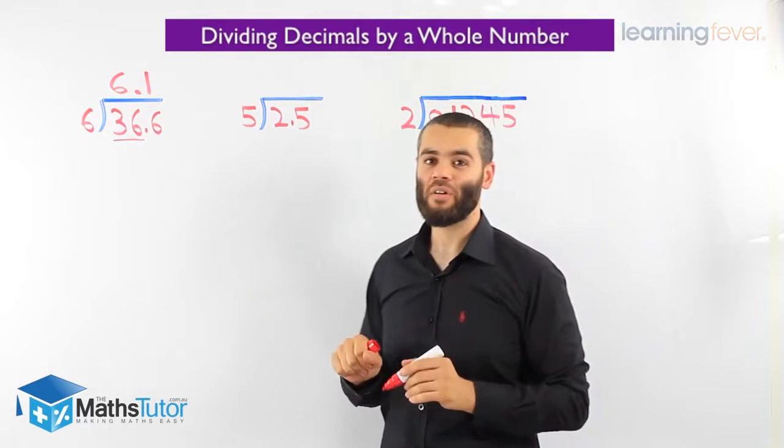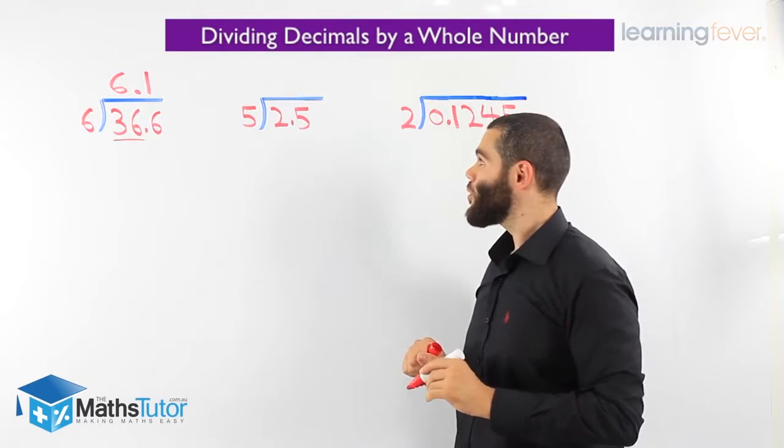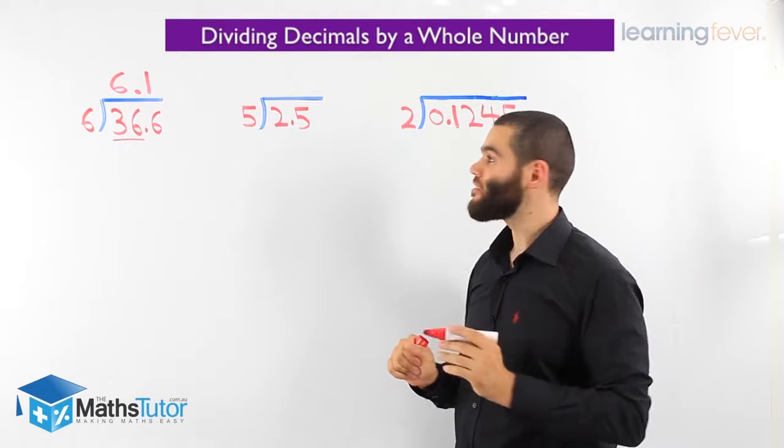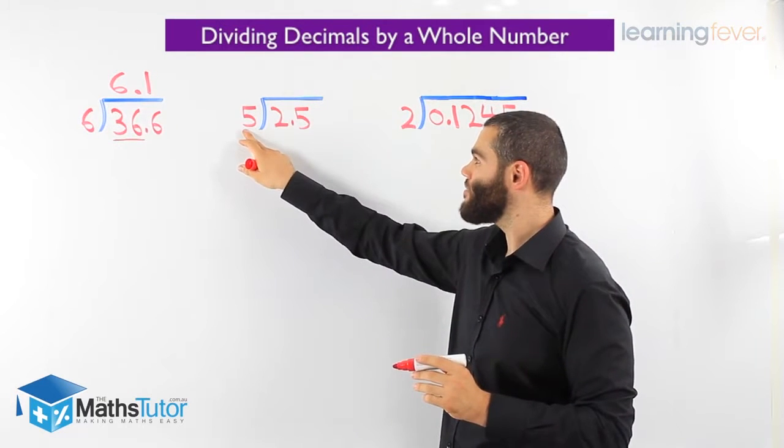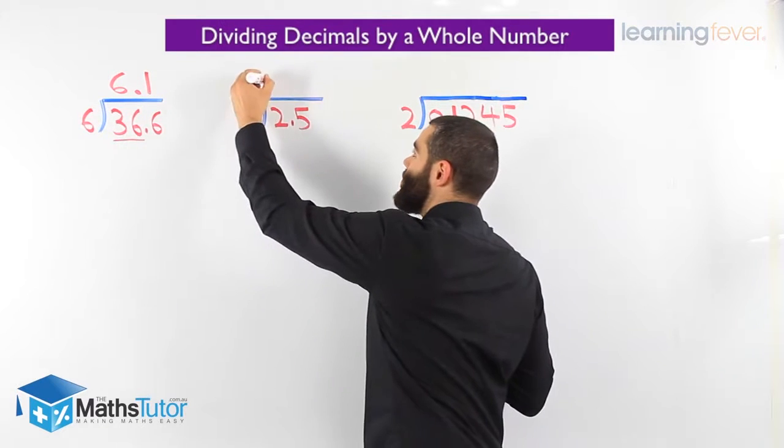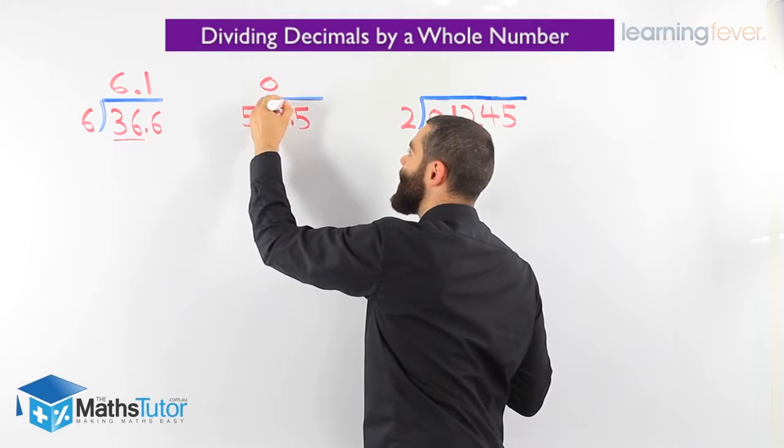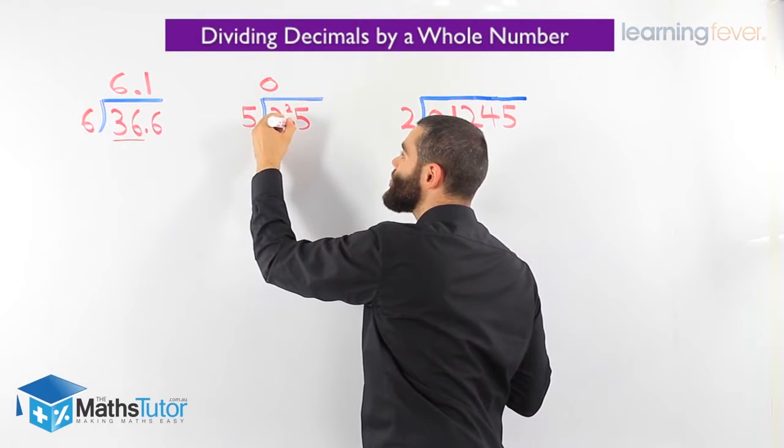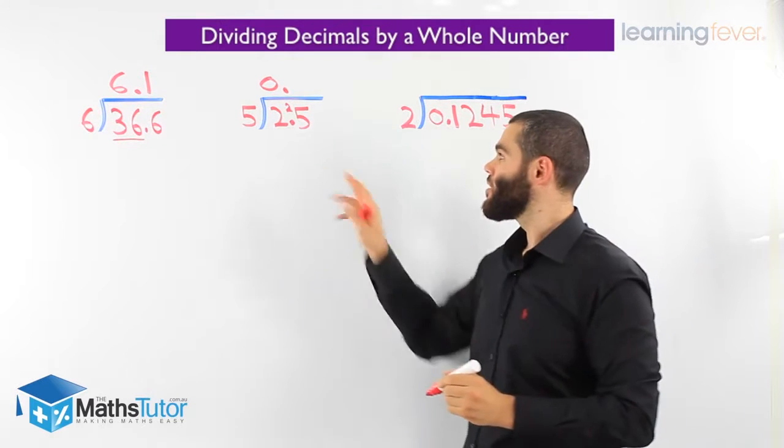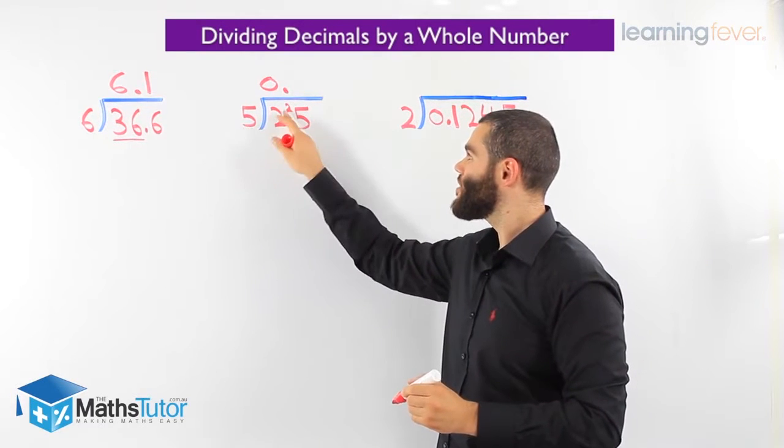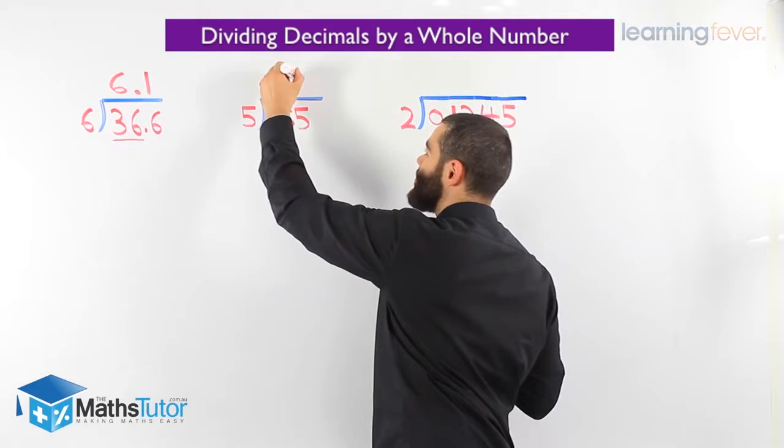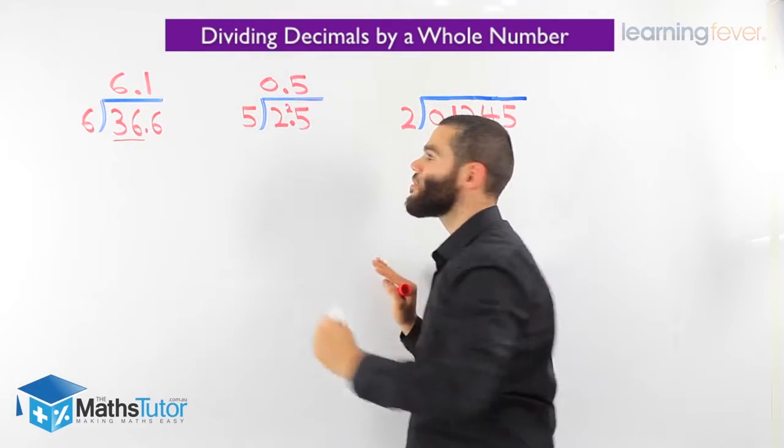Let's move on and see this one here. The question says, 2.5 is divided by 5. So, we ask, how many 5's go into 2? And we know, no 5's can get into 2. We put 0 and we carry the 2. And we notice we have our point. We must put our point straight away. How many 5's go into 25? We know that 5 goes into 25 5 times.